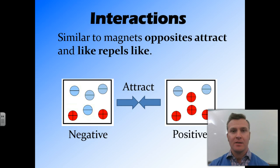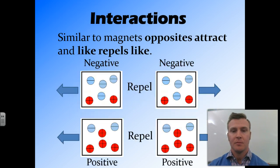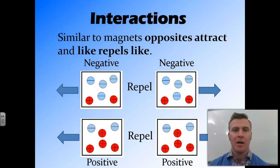Similar to magnets where north and south attract and north and north repel, electrostatic charge follows the same rule: opposites attract and like repels like. So if we have a negative and a positive object, they will attract each other. Conversely, two of the same charge will repel — a negative repels a negative, and a positive repels a positive.